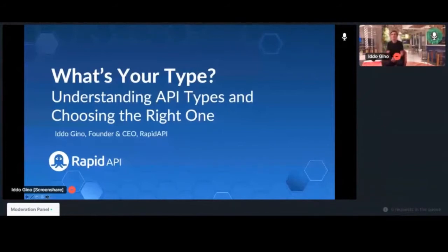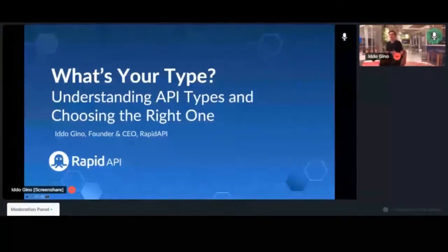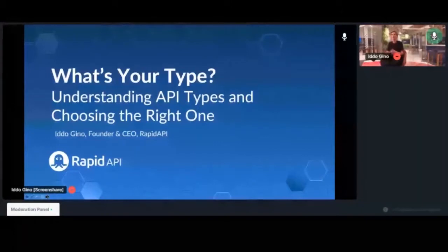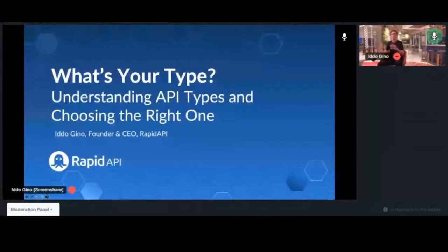My name is Ida. I'm the CEO and founder of Rapid API. I'm going to give this brief conversation today about different types of APIs and formats of APIs, and then understanding how they are similar, how they differ, and what's the right approach for choosing the right one — in terms of trying to build an overall framework for how to manage the architecture when we end up having multiple of these API types.